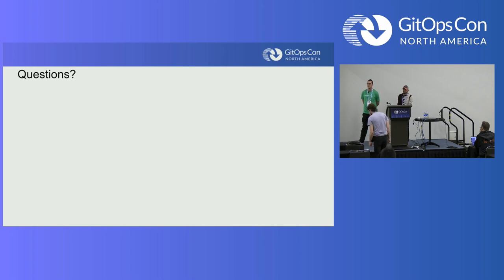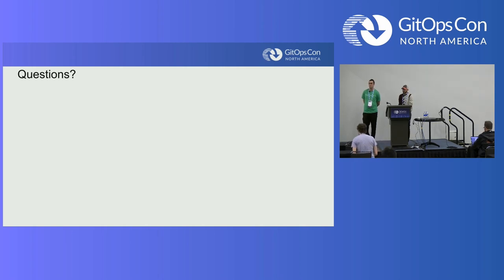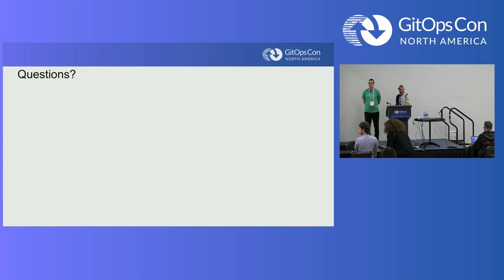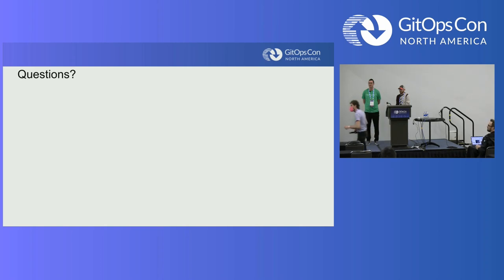An audience member noted they went through this exact journey a year ago and offered to chat afterward about next steps — specifically around ApplicationSets and how you can divide values across them. They observed the same path: single repo first, then multiple repos.